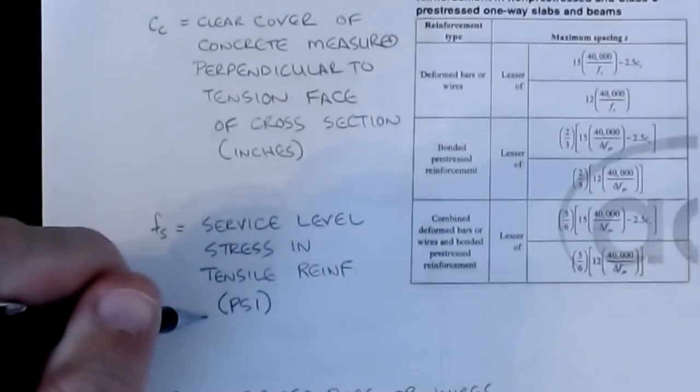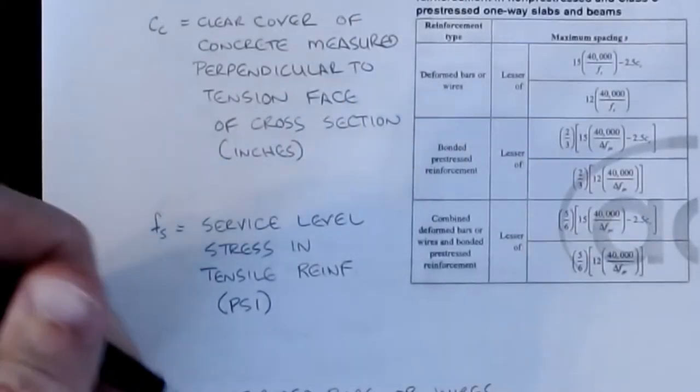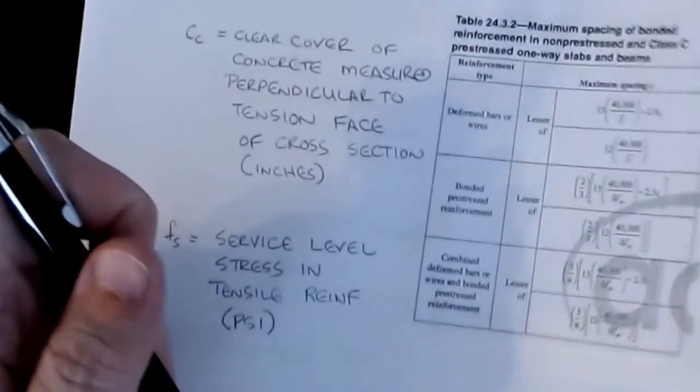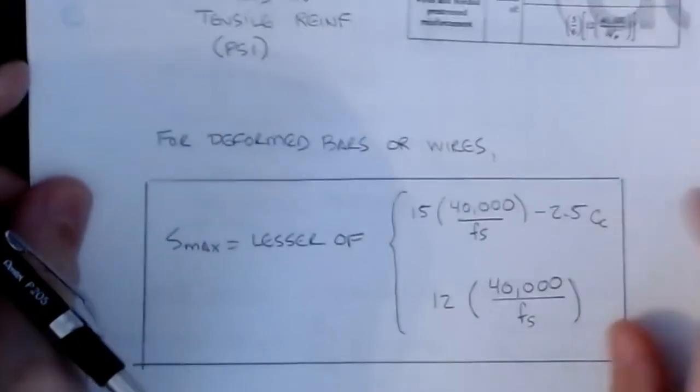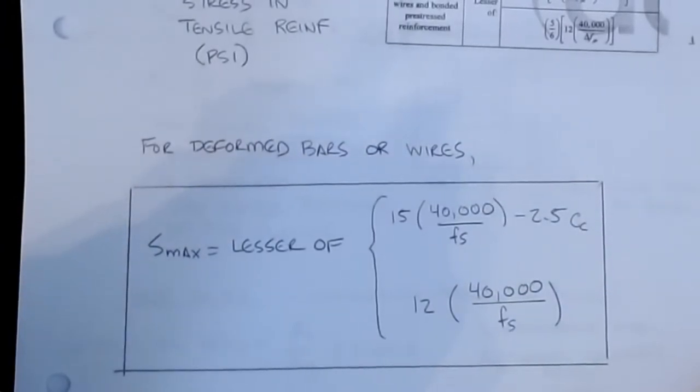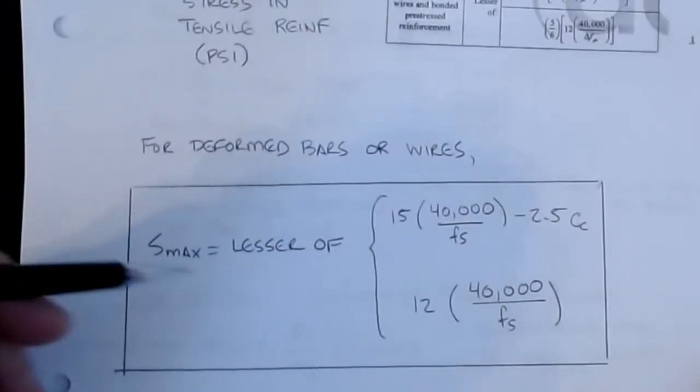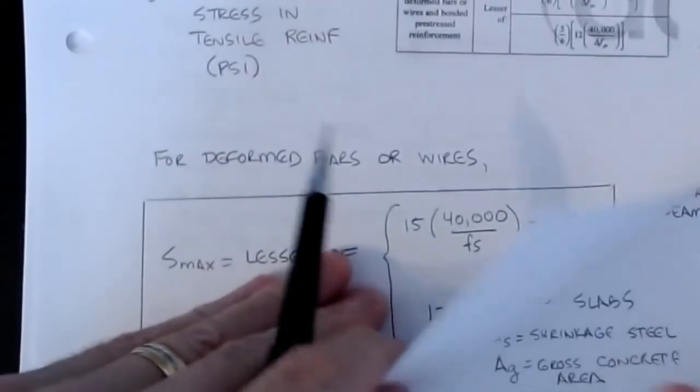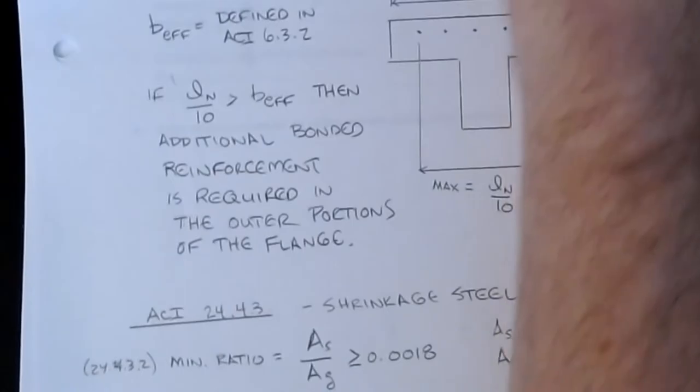And then Fs is, again, the service level stress in the tensile reinforcement, this is going to be measured as 0.6 times Fy, 60% is kind of the service level limit. Now notice in this equation, Fs is now in PSI, so it's kind of changed between the formulas on those. So if we look at that, just to kind of blow it up a little bit more so you can see it, these are the equations for S max, for the spacings between the two, and it's the smaller of these two particular values.